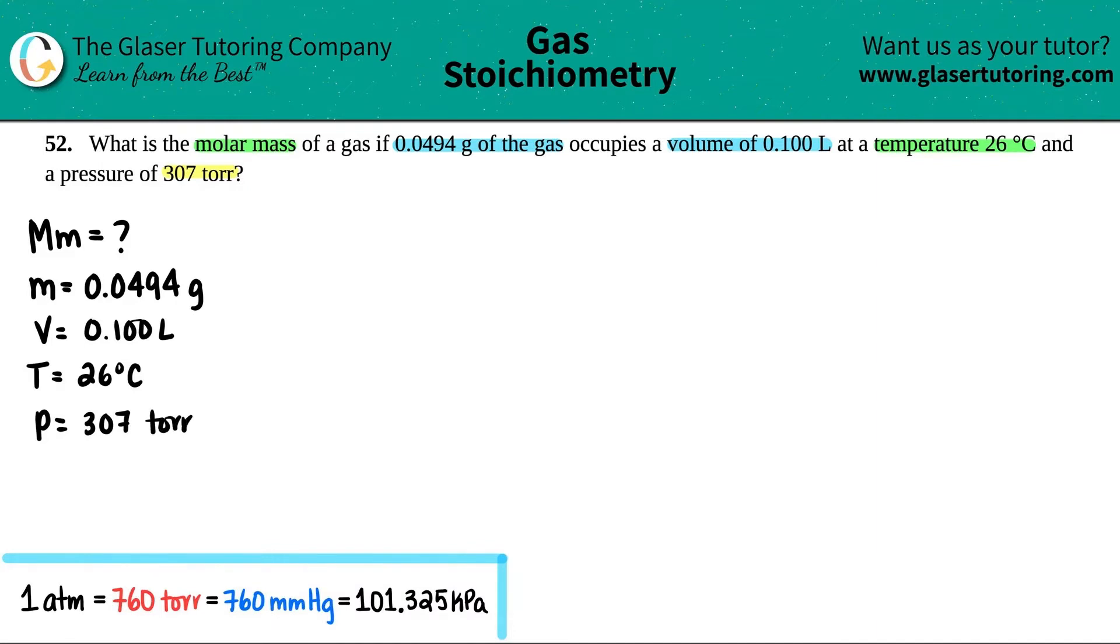Okay, now from here, I don't have any sets of variables. So the combined gas law is out. And I see that I only have one volume, one temperature, or one pressure. So the decision is between PV equals NRT or PMM equals DRT. Since they're specifically looking for the molar mass, it's just easier to use the derivation, which is this formula. PMM equals DRT.